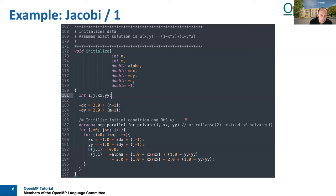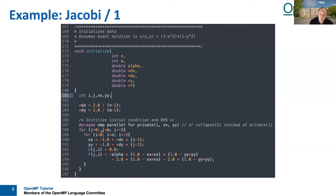Let me continue with the Jacobi code, which consists of two code snippets. There's one called the initialization, where we have matrices U and F. These are initialized and we can parallelize the initialization as well — although this is not really a hotspot. In about one month, we will talk about optimization for NUMA, and then it will be really important to do the initialization in parallel. So we will come back to this example again later on.